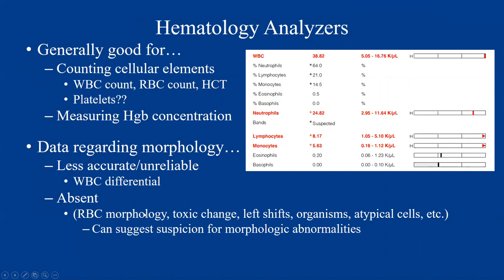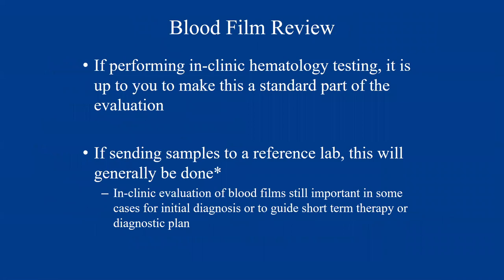The analyzer is not going to look for things like red cell morphology. It can't definitively identify a left shift, toxic change, organisms, or atypical cells. It can suggest the presence of certain things, but it cannot definitively identify them.